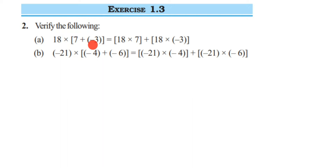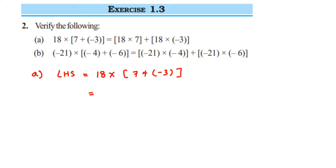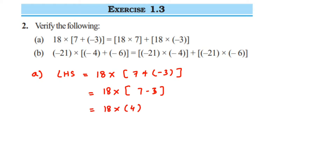Let's start with the first question. I'm going to take the LHS part first. LHS is 18 multiplied by (7 + (-3)) in the bracket. We're going to solve the bracket part first, which is 7 + (-3). Plus into minus will become minus, so it will be 7 minus 3.